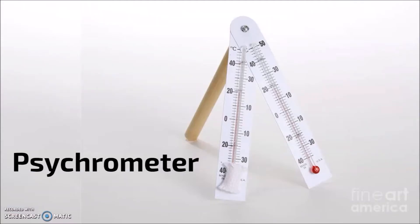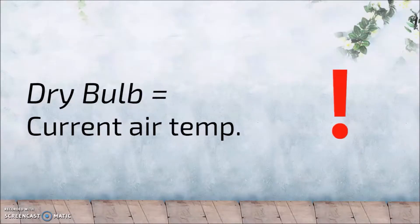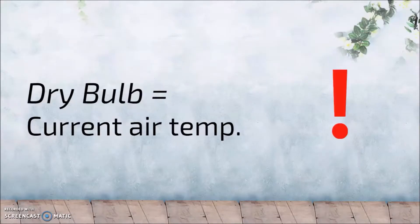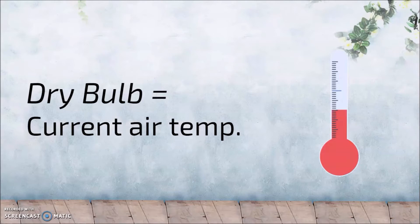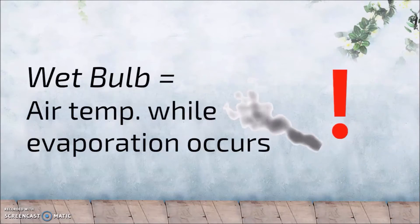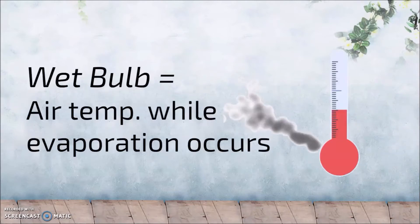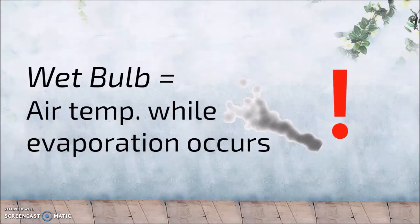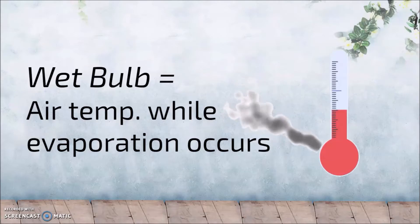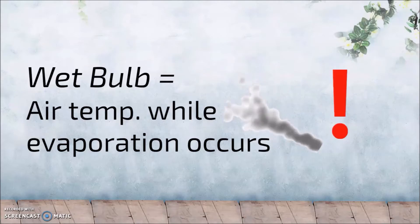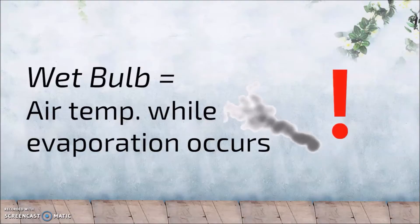The way we measure water vapor in the air is with a psychrometer. A psychrometer has a dry bulb, which tells us the regular temperature, and a wet bulb, which tells us the temperature while evaporation occurs. The wet bulb has a little wick that has water on it. Here's a video about how it works.